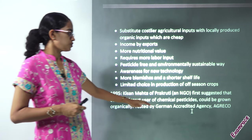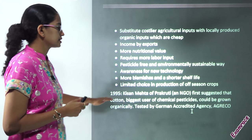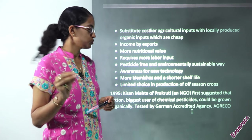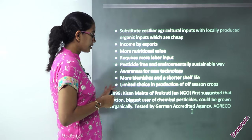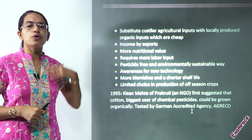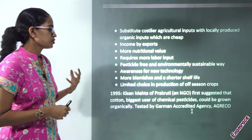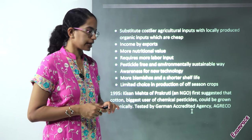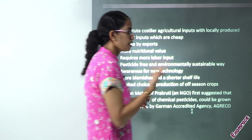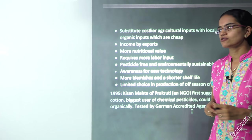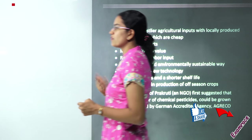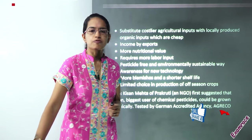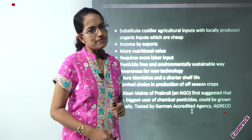Then you have one of the NGOs by the name Prakriti by Kisan Mehta. It first suggested that cotton is one of the biggest users of chemical pesticides and we must grow cotton organically. This was tested by the German-accredited agency known as Agrico. Those are some of the initiatives taken up by various organizations for development. Stay tuned for further updates in economics — we will be bringing in more important topics for you before your exam. Have a great day ahead.